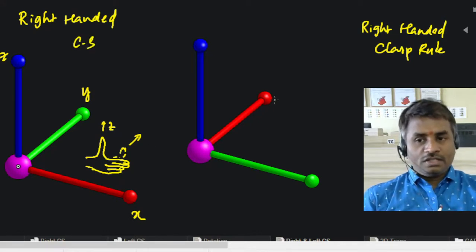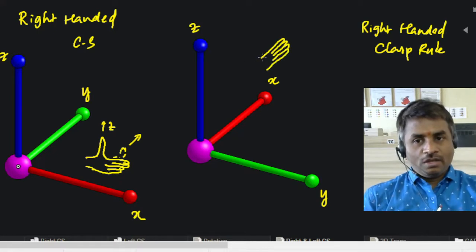Whereas in this case, if you see, this is the x-axis, y-axis, and z-axis. When we keep our fingers extended in the direction of the x-axis, thumb is in the z-direction.